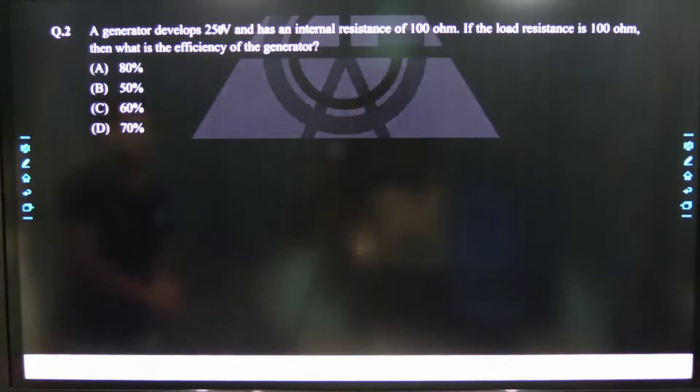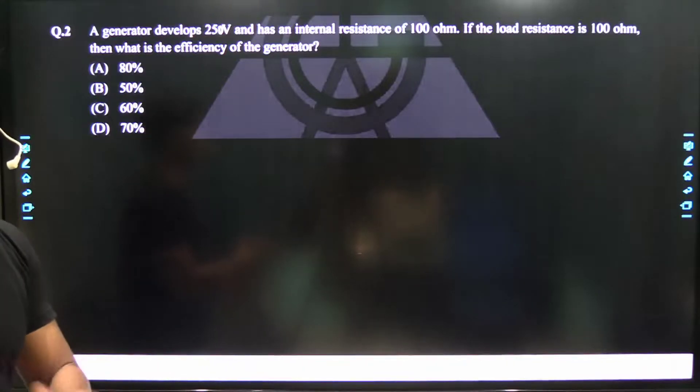Question number 2: A generator develops 250 volt and has an internal resistance of 100 ohm. If the load resistance is 100 ohm, then what is the efficiency of the generator?